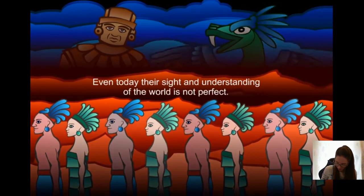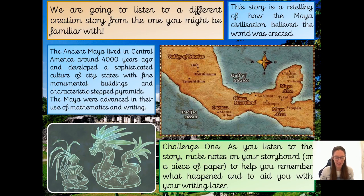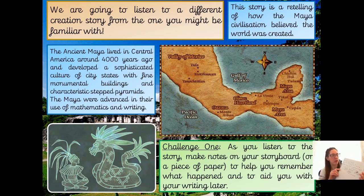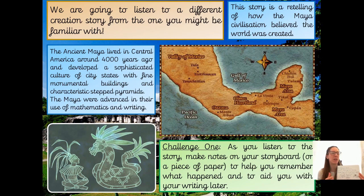Remember you can replay that and watch it as many times as you like. I've been making some notes to show you two different ways you could do it. Mrs. Newport likes bullet points, so at the top I've got: 'The world is dark and unformed. Two gods — Tepeu and Gucumatz — whatever they thought came into being.' I didn't catch everything there so I've left a bit blank — I'd go back and watch the video again to top up those notes. Then: 'they decided they wanted living things to enjoy the earth.'